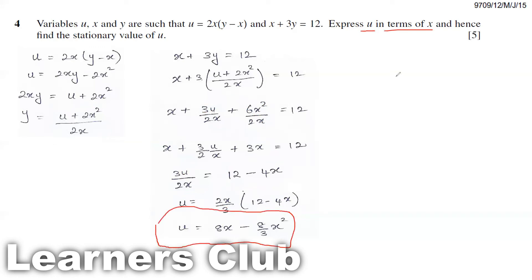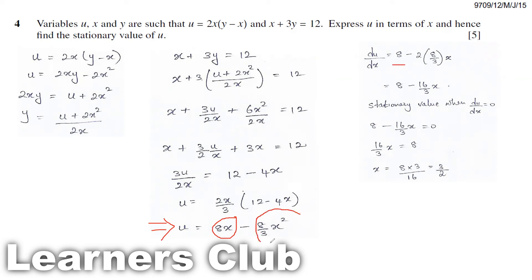The next part of the question says find the stationary value of u. To find the stationary value of u, first we have to find the differentiation of u with respect to x. So I'm differentiating this term u with respect to x. When you differentiate 8x, you get 8. When you differentiate this term, the power comes forward, so 2 into 8 by 3 into x.